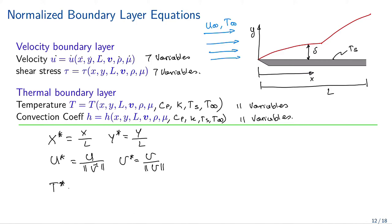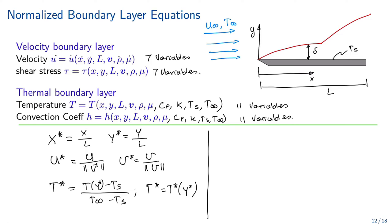The dimensionless temperature T-star is defined as T(Y) minus Ts divided by T-infinity minus Ts. We can also express T-star as a function of Y-star, since Y is a function of Y-star, so we do not need to write that explicitly.